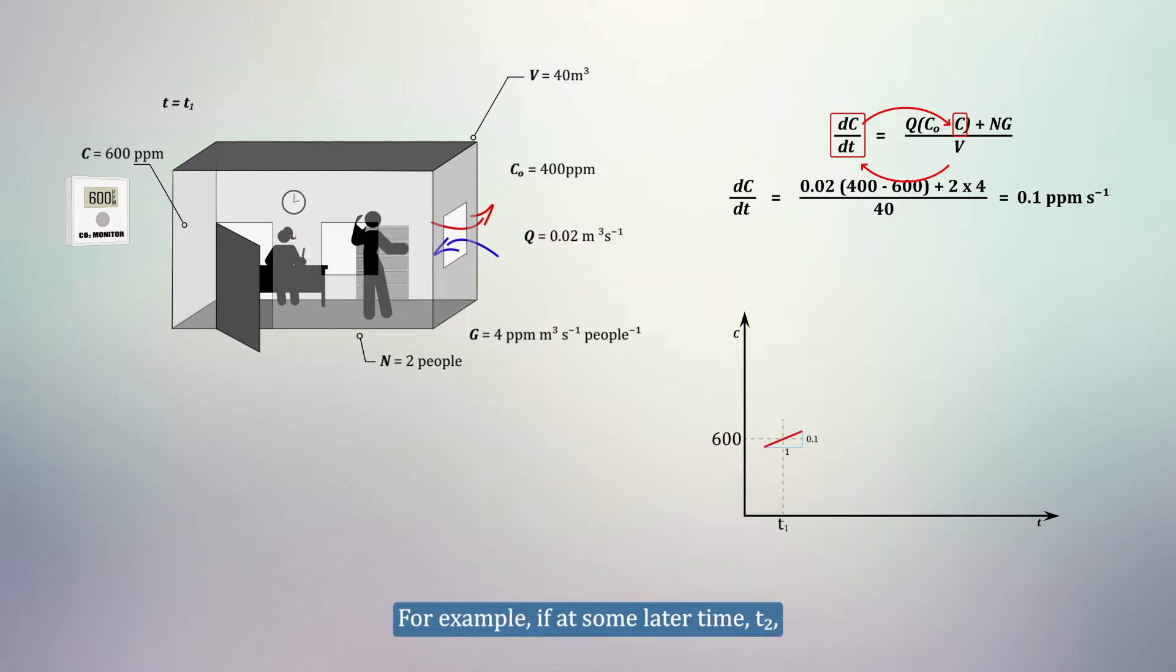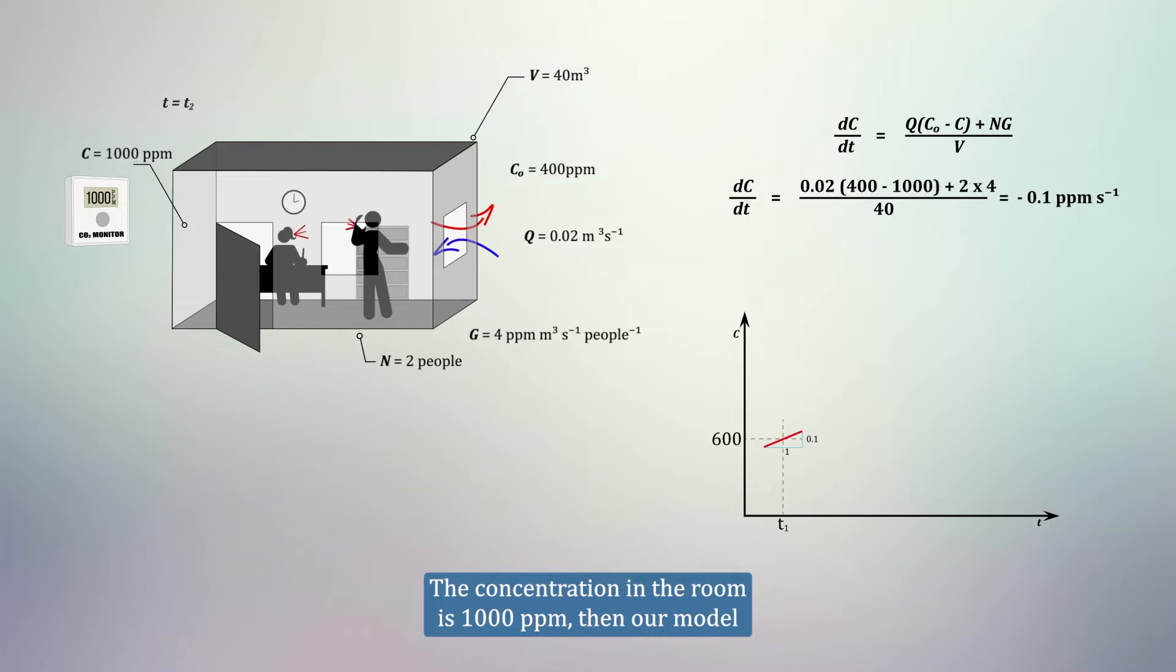For example, if at some later time, T2, the concentration in the room is 1000 ppm, then our model now tells us that CO2 will instead be falling at a rate of 0.1 ppm per second.